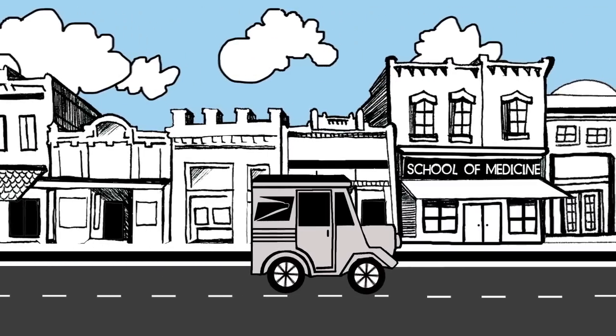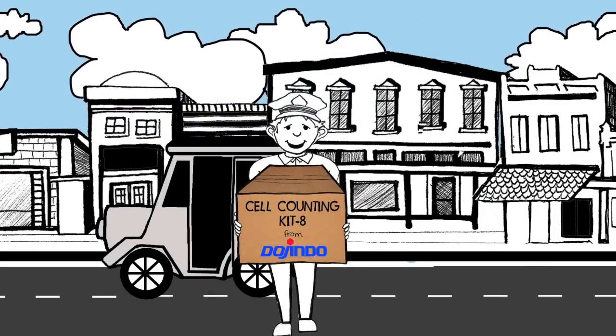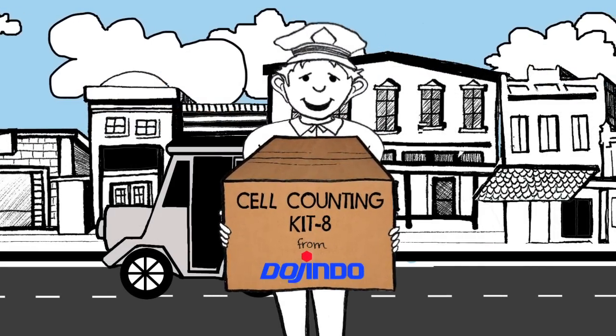Dogindo Cell Counting Kit-8 is a ready-to-use one-bottle solution. Add, incubate, measure absorbance.